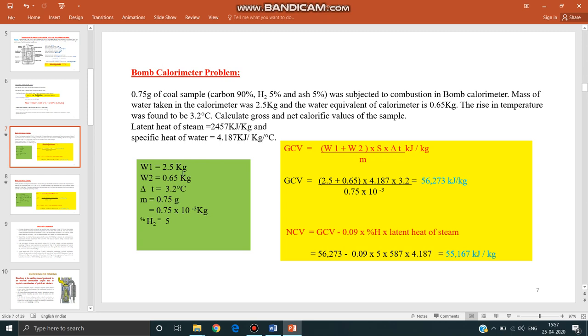Now everything should be in SI unit. So this we have to convert it into SI unit, multiply it by 10 to the power minus 3. Percentage of hydrogen is 5. Carbon and ash percentage they have given is not required, only hydrogen percentage is required.